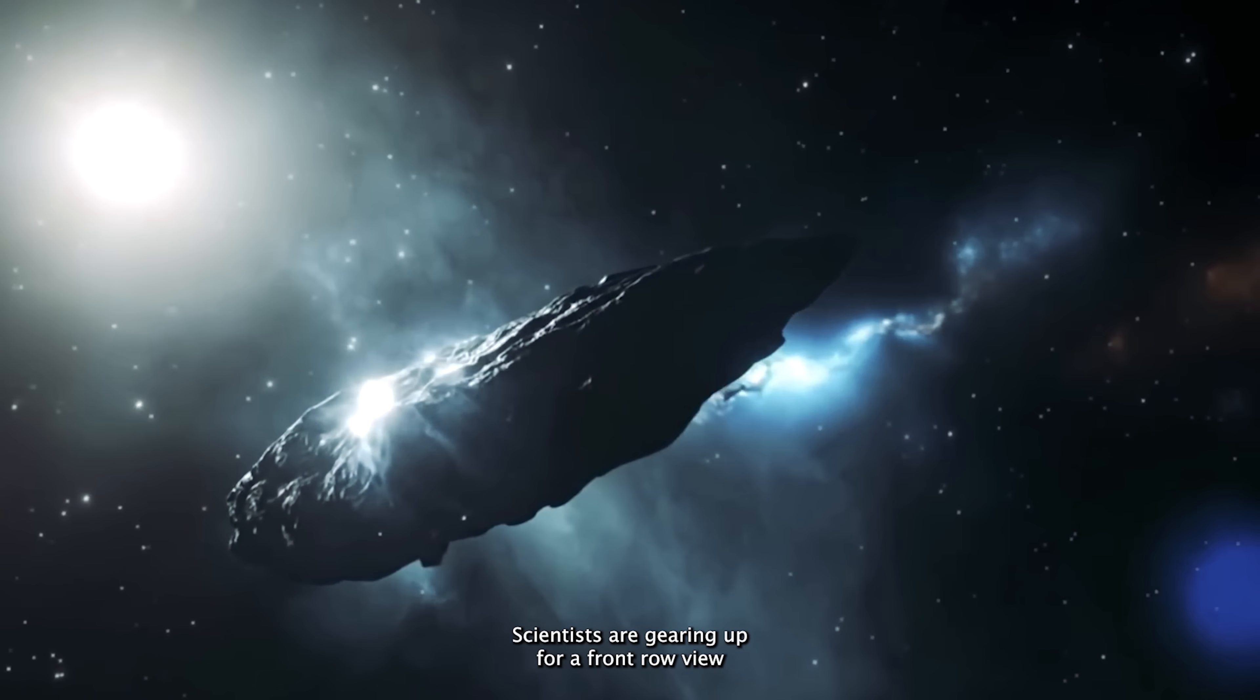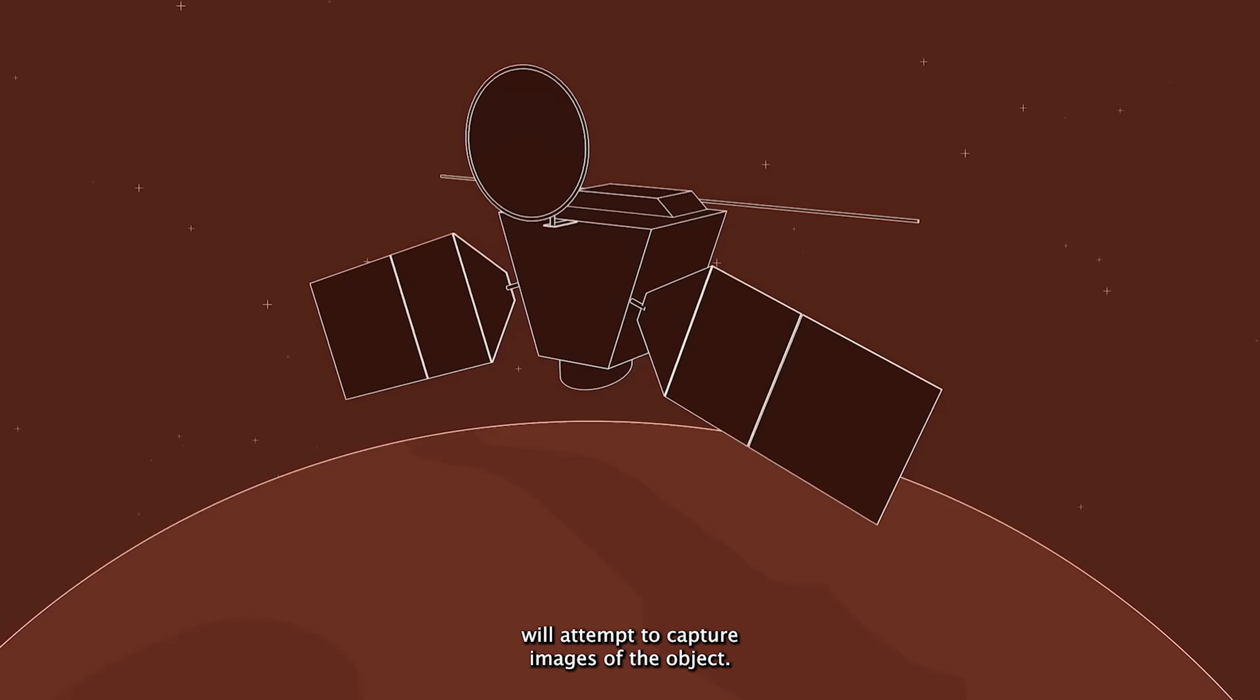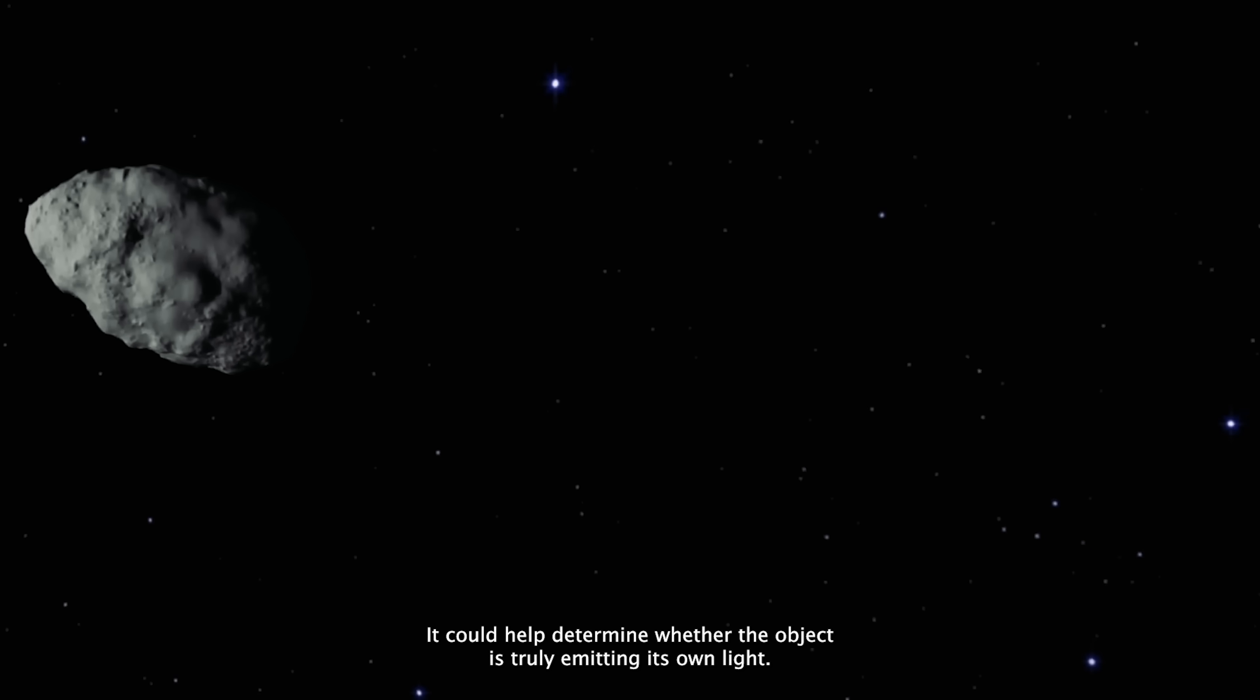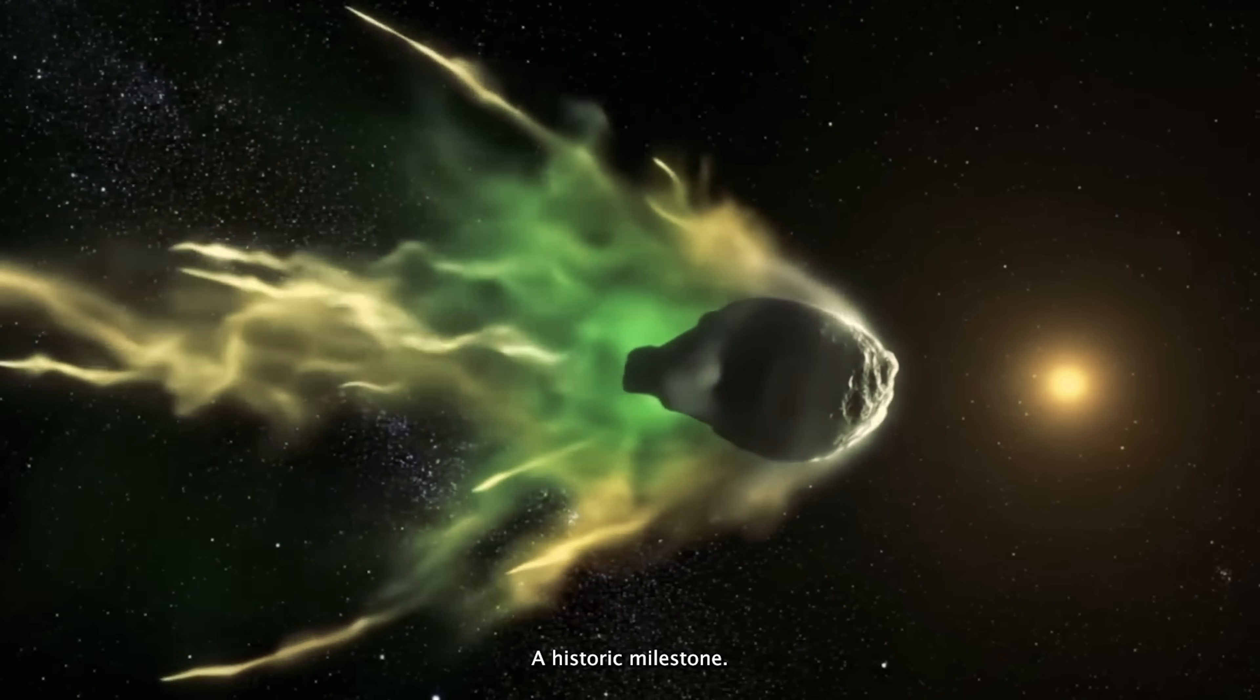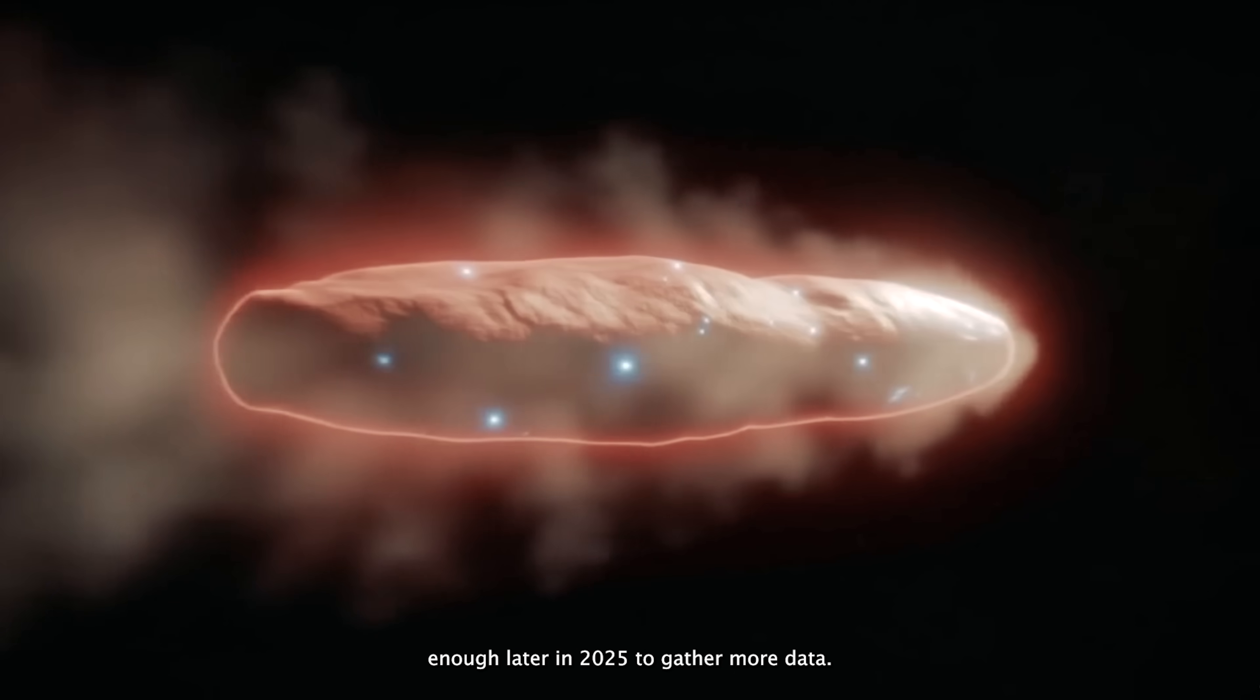Scientists are gearing up for a front row view when this visitor sweeps past Mars on October 3rd, 2025. NASA's Mars Reconnaissance Orbiter, equipped with the powerful HiRISE camera, will attempt to capture images of the object. While the camera can reveal details down to about 30 kilometers per pixel, not enough to see small surface features, it could help determine whether the object is truly emitting its own light. This could mark the first time an interstellar object is imaged from another planet, a historic milestone. Other spacecraft, like NASA's Psyche mission and ESA's JUICE probe, may also get close enough later in 2025 to gather more data.